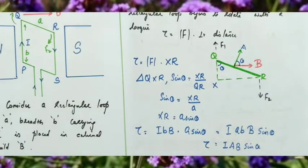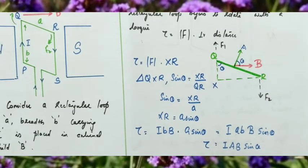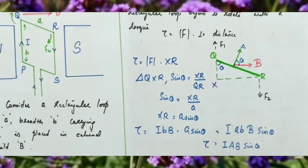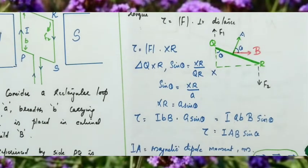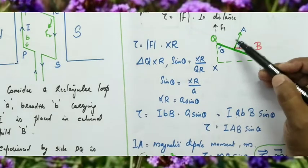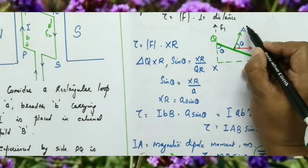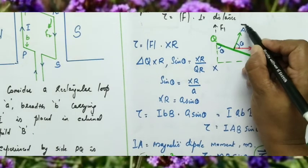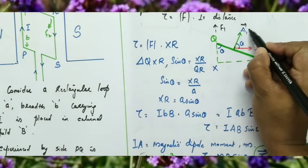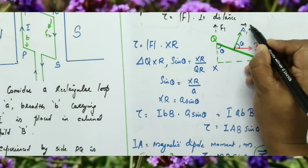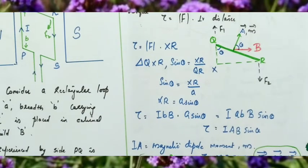The direction of magnetic dipole moment: M equals IA, and its direction is the same as that of the area vector. So the direction of magnetic dipole moment and the direction of the area vector are the same.